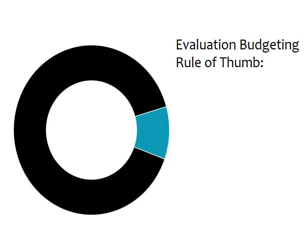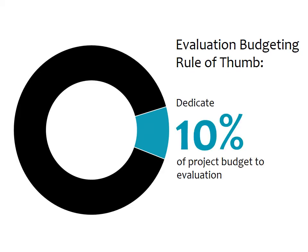There is a general rule of thumb about budgeting for evaluation: 10% of a project's cost should be allocated for the project evaluation, and that's for evaluation in any context. So that's a good place to start, and then you can go up or down from there, depending on what level of evaluation is needed for your project. The fact of the matter is, if evaluation is going to bring value to your project, you have to fund it adequately.